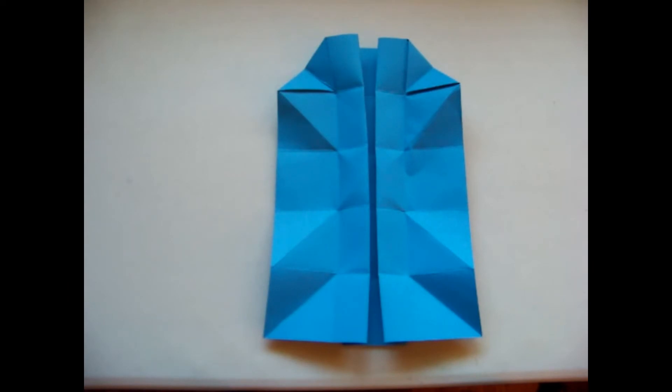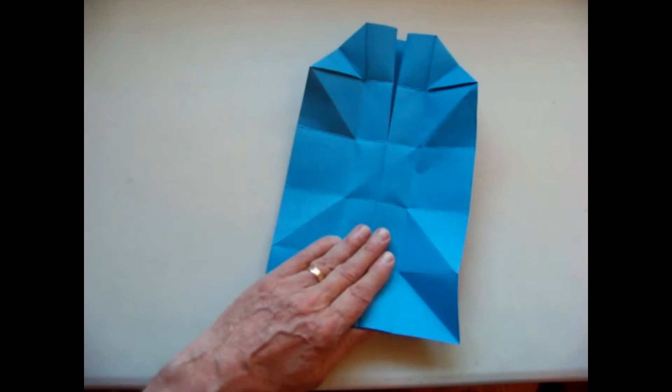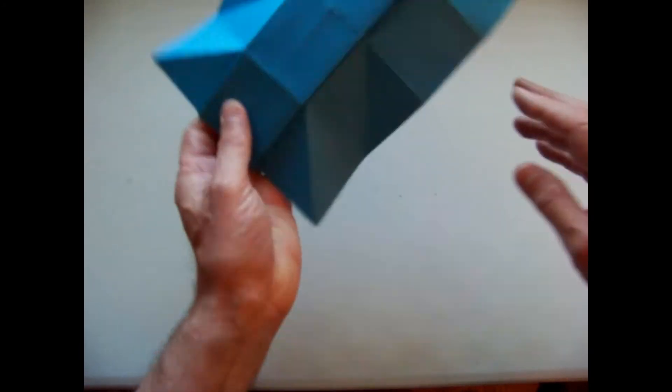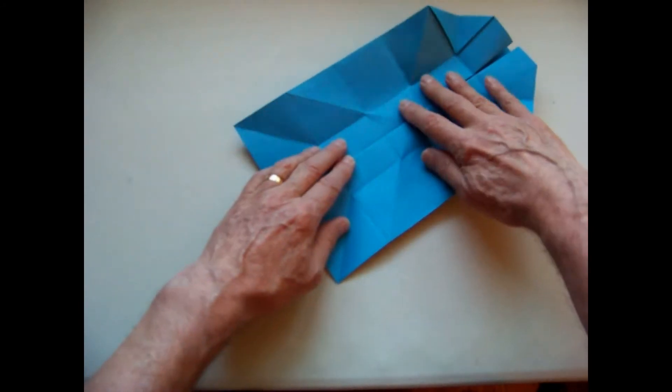We now have all the folds necessary to complete the final assembly. This will be the inside of the cube. This will be the outside of the cube. We will work from the inside pleated side.